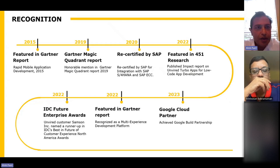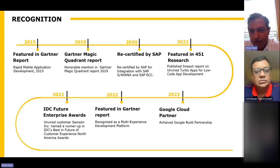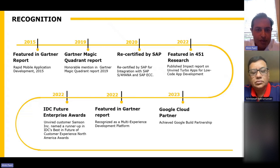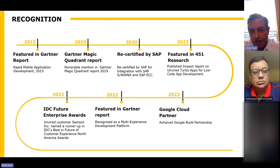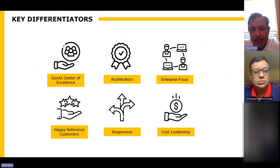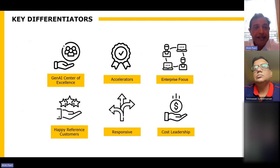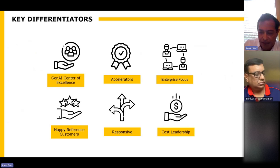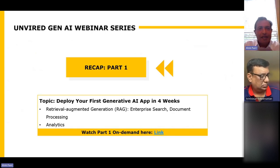We've received constant recognition, most recently being featured in Gartner reports in 2022. We got an award for customer experience and building apps in that area, and we also became a Google Cloud partner while keeping our SAP certifications recertified. Our key differentiators are the center of excellence we built for Gen AI, the accelerators we've built, and our happy reference customers. Let's start diving into the topic today — Gen AI.